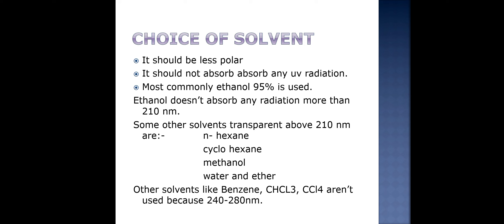The next topic is the choice of solvent — which solvent should be used when operating the UV visible spectrophotometer. The sample solvent should be less polar and should not absorb any UV radiation. The most commonly used solvent is ethanol, which is 95% pure, because ethanol doesn't absorb radiation above 210 nm. Other solvents transparent above 210 nm include N-hexane, cyclohexane, methanol, water, and ether. Solvents like benzene, chloroform, and carbon tetrachloride are not used because they absorb in the 240 to 280 nm range.